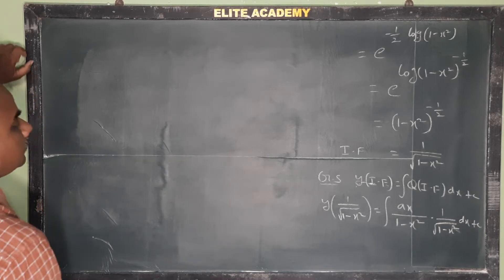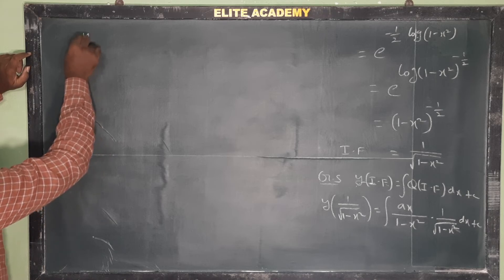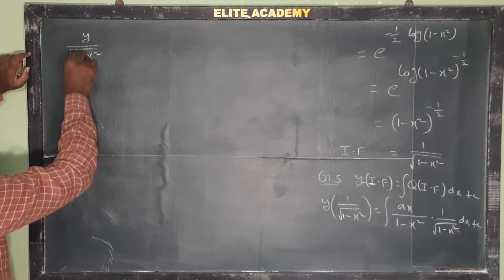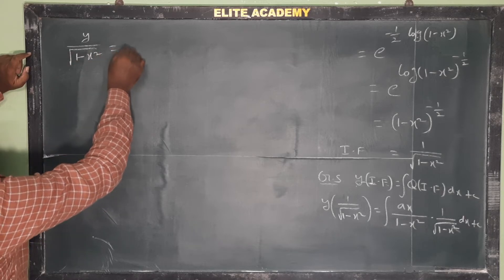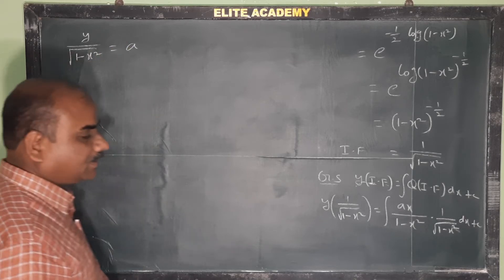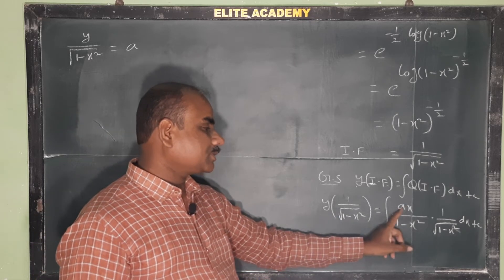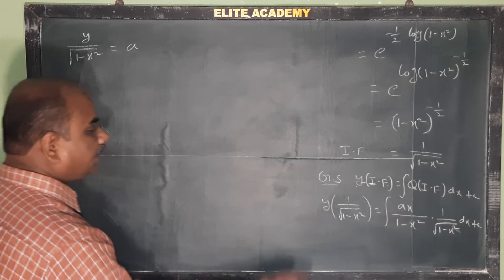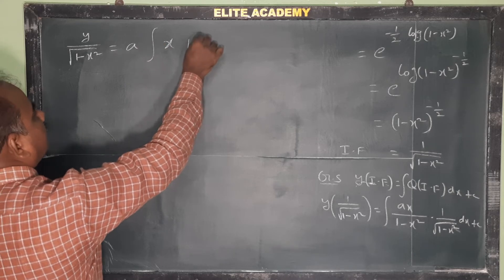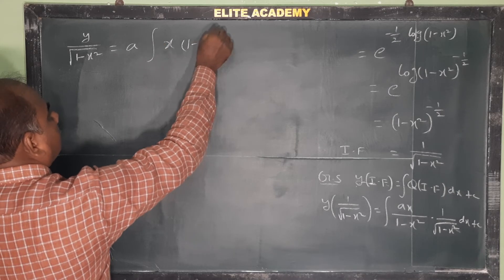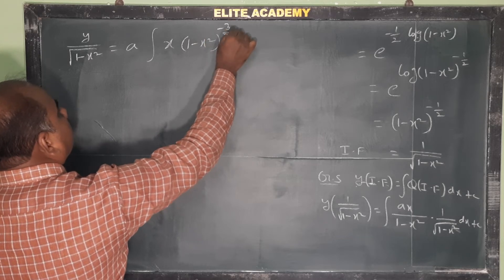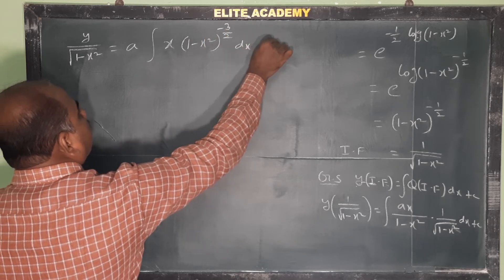Continuing, y/√(1 - x²) = a · ∫ x · (1 - x²)^(-3/2) dx + c. We take the constant a outside the integral, so the integral becomes ∫ x · (1 - x²)^(-3/2) dx.